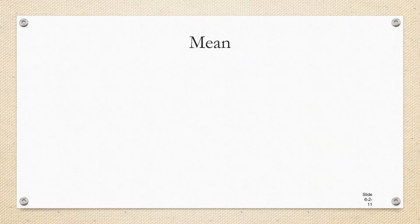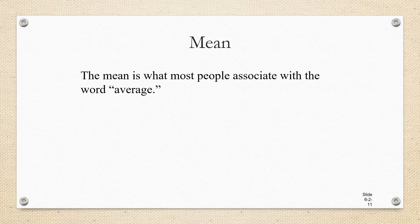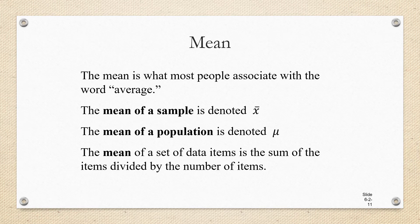So we've already talked about the mean, which we know is just another word for taking the average of a set of data. The mean of a sample is denoted x bar and the mean of a population is denoted mu. And we've already talked about how to calculate the mean. The mean of a set of data items is the sum of the items divided by the number of items.